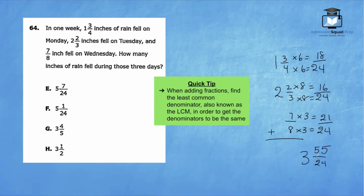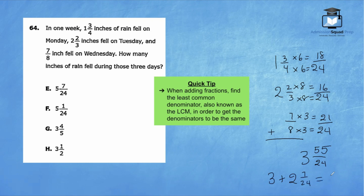This is not our final answer — we need to turn the improper fraction into a mixed number. 24 goes into 55 two times, so we have three plus two and seven over 24. Our final answer is five and seven over 24, which is choice E.